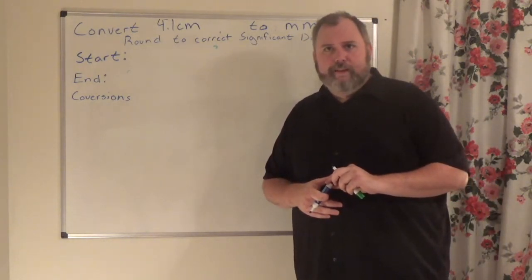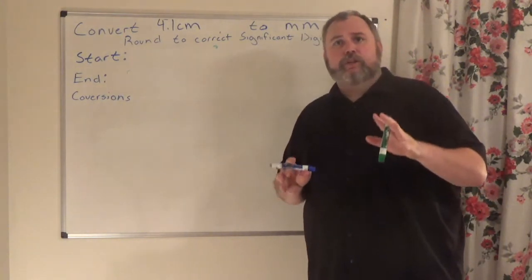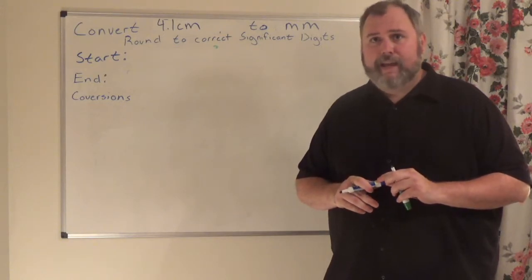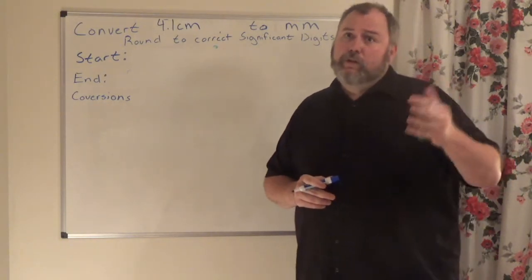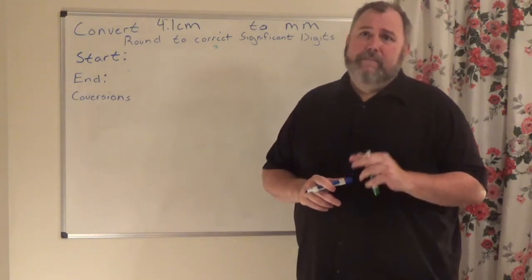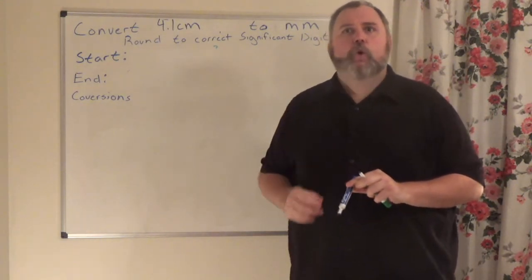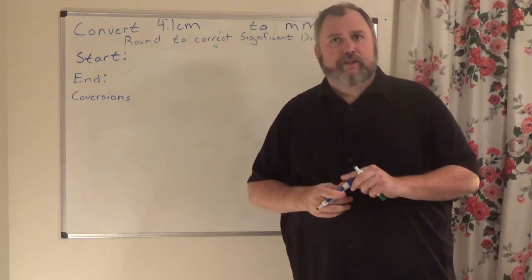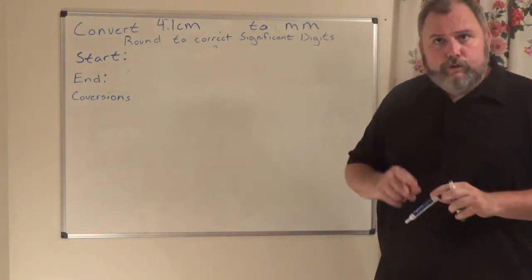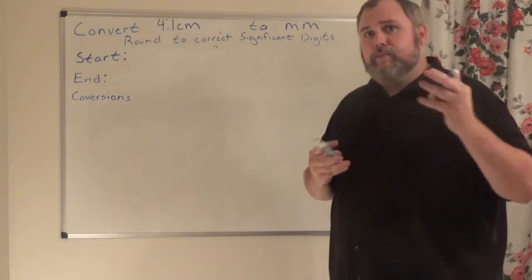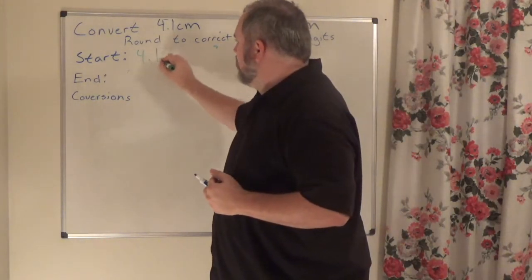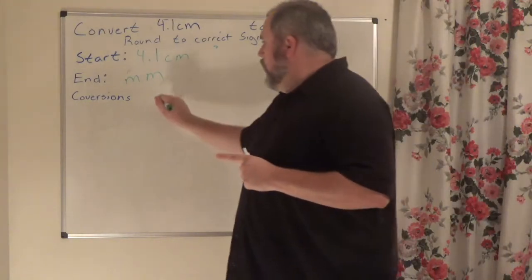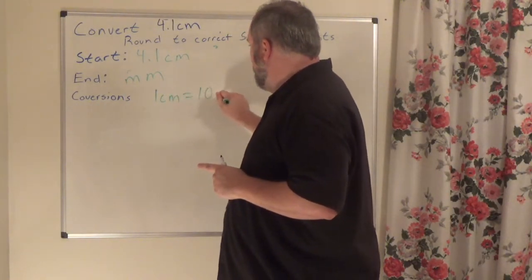There are easier ways of converting metric without looking at your formula sheet — I may make a video about King Henry — but for now I want to keep with the formula sheet. Where am I starting? 4.1 centimeters. Where is my end game? Millimeters. My conversion factor: one centimeter is equal to 10 millimeters.